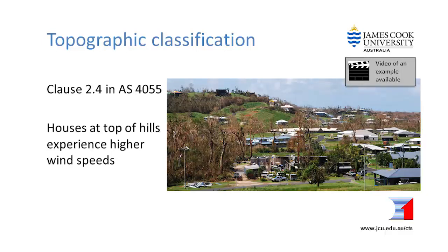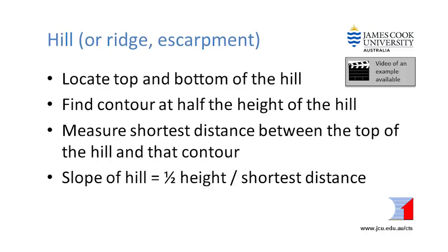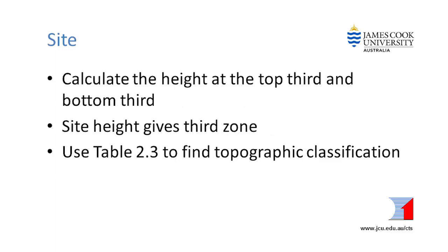The third step is to determine the topographic classification. Houses near the tops of hills experience higher wind speeds. Clause 2.4 describes the method to determine the topographic classification. First, focus on the hill. Use contour maps to find the top and bottom of hills, ridges or escarpments, and calculate their height. Then mark the contour around the mid-height of the hill and measure the shortest distance between the top of the hill and that contour. The slope of the hill is calculated by dividing half the hill height by the shortest distance between the top of the hill and that contour. Then focus on the site — use the contour map to determine whether the site is in the top, middle or bottom third of the hill height. Note that the region beyond the crest of an escarpment is treated differently. Use Table 2.3 to determine the topographic classification.